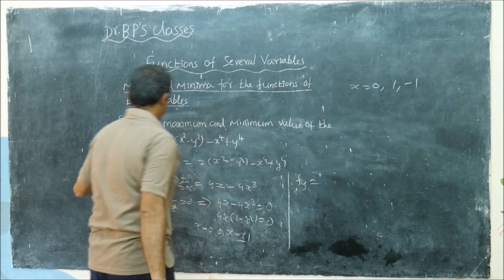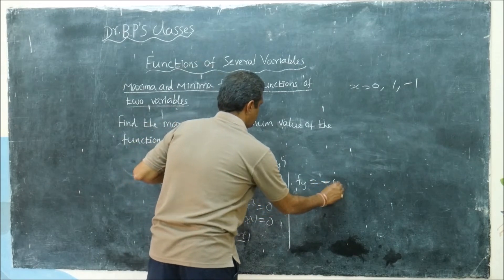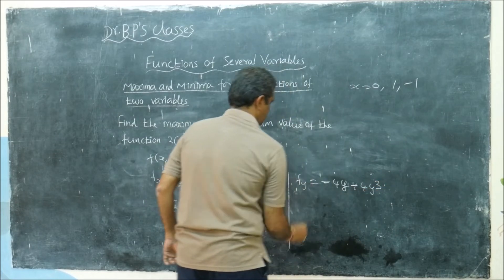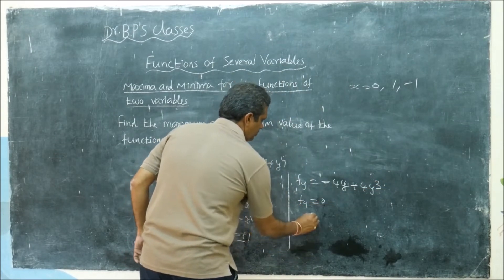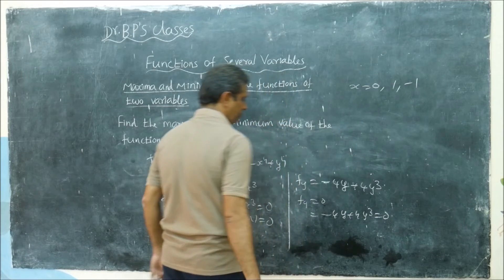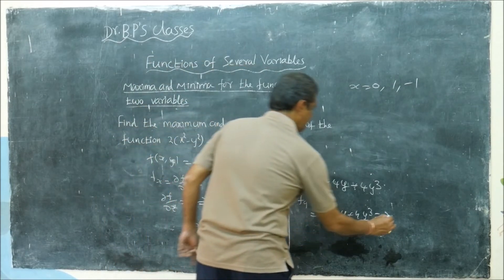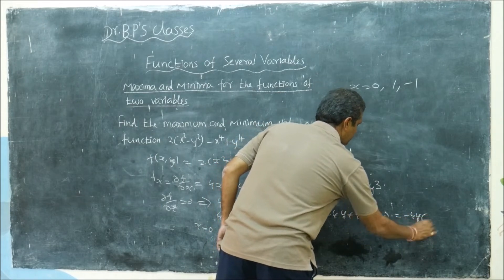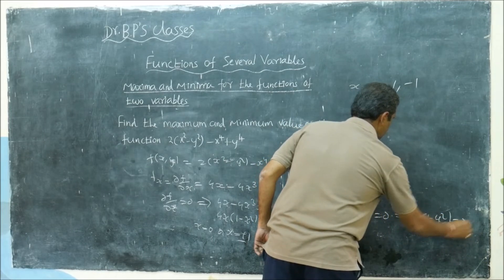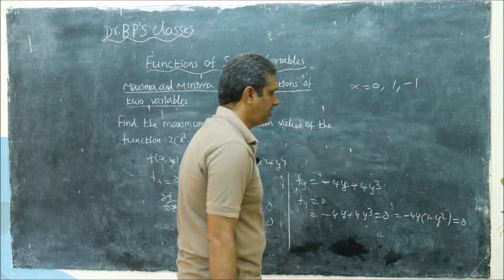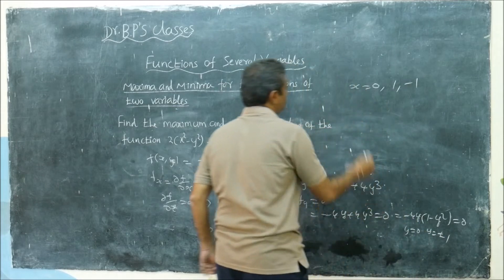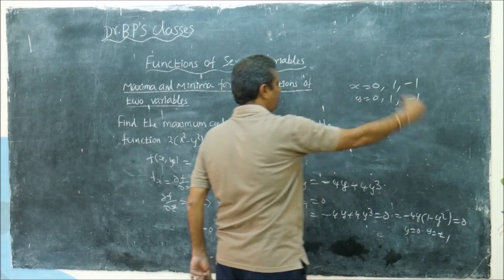Next, fy equals ∂f/∂y. We get minus 4y plus 4y³. Setting fy equal to 0: minus 4y plus 4y³ equal to 0. Taking minus 4y common: minus 4y(1 minus y²) equal to 0. Minus 4 cannot be 0, so y equal to 0 or y equal to plus or minus 1.